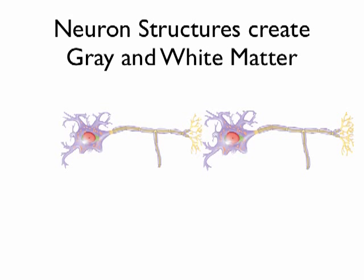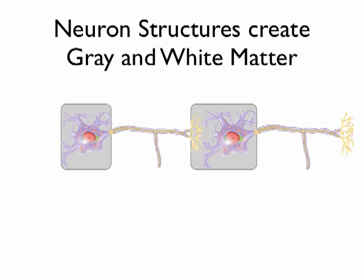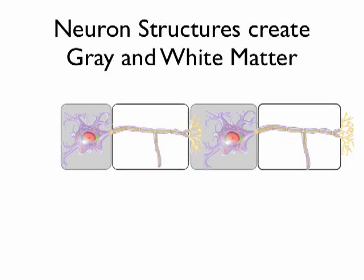Let's use a simple diagram of a couple of neurons to make sense of this. Here I've got two neurons — you can identify dendrites, cell bodies, and axons. One neuron is stimulating another, maybe going over to a muscle. The gray matter would be around the groups of cell bodies and dendrites, while the white matter would be where the axons run. You begin to see what happens in and around the cell body and dendrites — processing, decision-making.